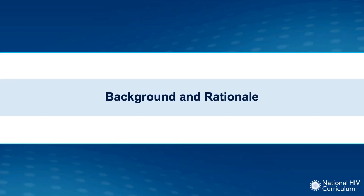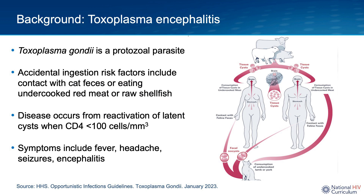Diving right into background and rationale: toxoplasma encephalitis is caused by Toxoplasma gondii, which is a protozoal parasite that typically causes encephalitis in profoundly immunocompromised individuals. Encephalitis is probably one of the most common manifestations seen with toxoplasma infection, but other clinical presentations have been described in the literature, including retinitis and pneumonia.